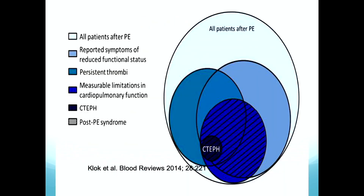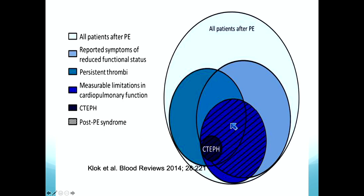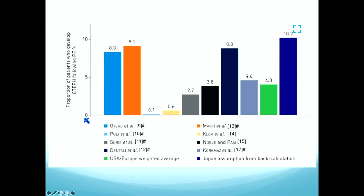Looking at this paradigm: we have a large number of patients with PE, only a percentage of whom have reported symptoms or reduced functional status. A smaller percentage go on to have persistent thrombi in the pulmonary system, and a smaller number still have measurable cardiopulmonary limitation. CTEPH is this small subset who develop pulmonary hypertension from their VTE. Post-thrombotic syndrome is also a real diagnosis here. The literature on incidence is all over the place — estimates range from 0.1 to 10%.